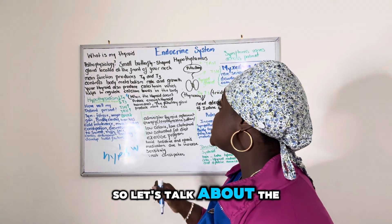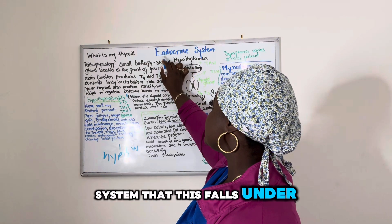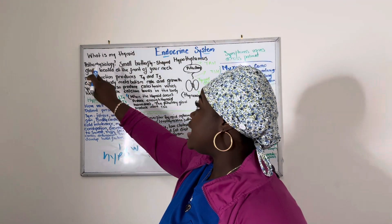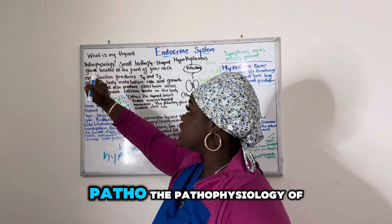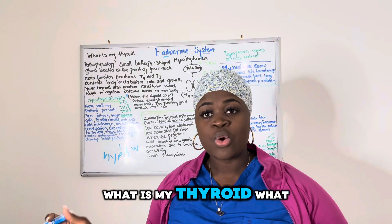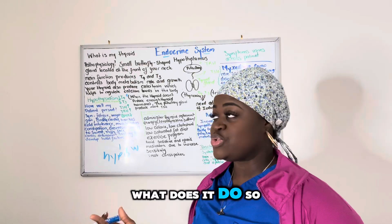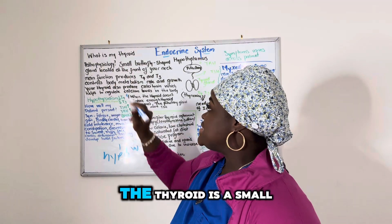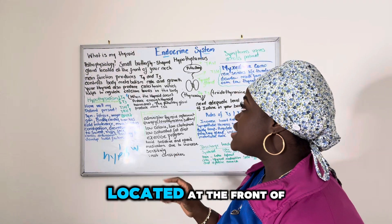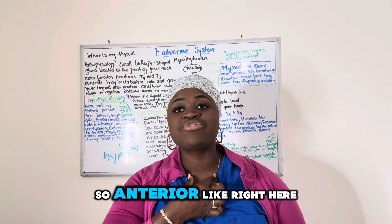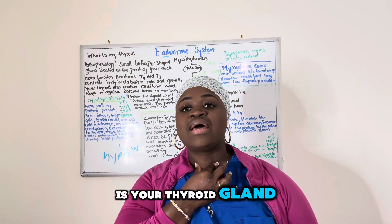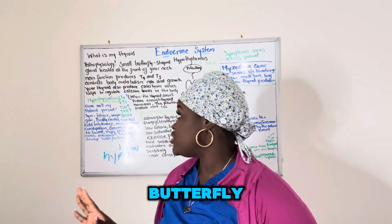This condition falls under the endocrine system. Let's talk about the physiology. The thyroid is a small butterfly-shaped gland located at the anterior front of your neck — right here. It shapes like a butterfly and is located at the front of your neck.